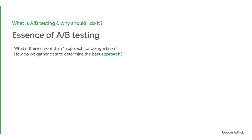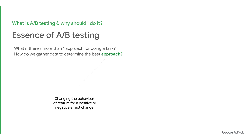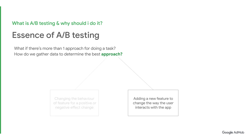Some scenarios where this may occur include changing a feature and measuring if it has a negative or positive effect on user behavior, or adding a new feature and determining which variation of the new feature works best. In each of these scenarios, you are comparing two variations of your app — version A and version B — in a head-to-head test to see which produces the best results.